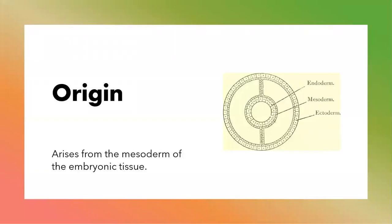Where does connective tissue come from? Connective tissue comes from the middle layer of the embryonic tissue known as the mesoderm. The embryo has the outer coat or outer layer which is the ectoderm, the middle layer known as the mesoderm, and the inner layer known as the endoderm. Connective tissue originates from the mesoderm — that's the same area where muscle tissues originate.